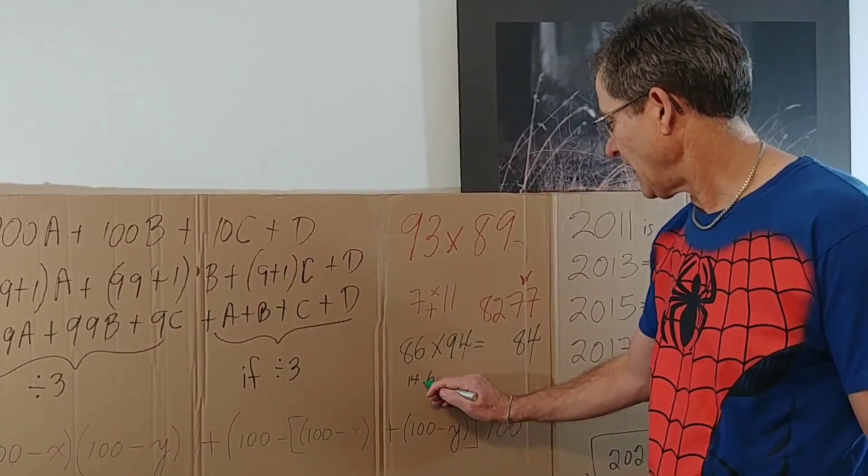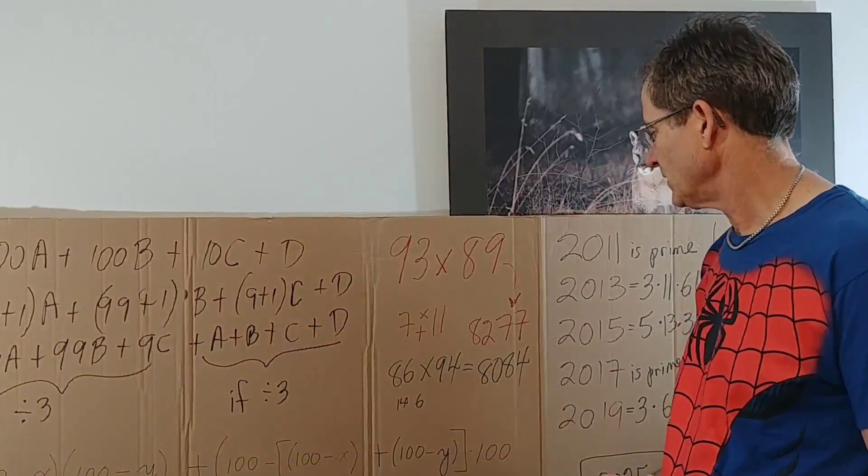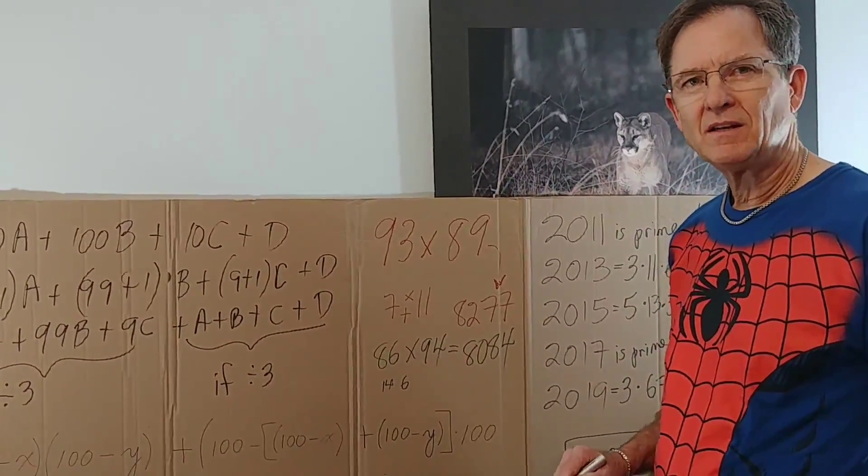And then add them. You get 20. Subtract 20 from 100 and you get 80, 84. Isn't that amazing? Spooky.